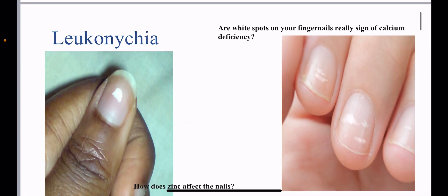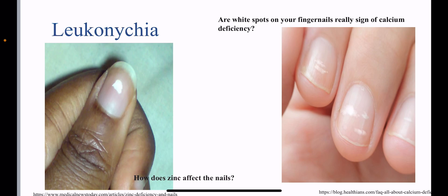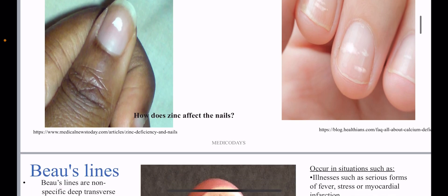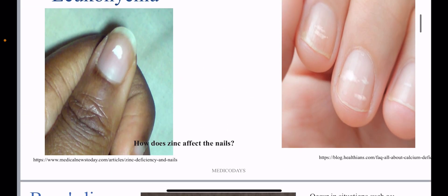One of the most famous conditions that repeatedly comes up in competitive exams is leuconychia. It is usually seen in zinc deficiency. White spots on your fingernails are also a sign of calcium deficiency. So leuconychia is seen in both calcium deficiency and zinc deficiency.